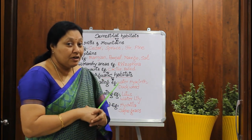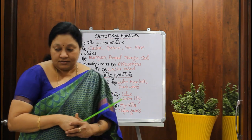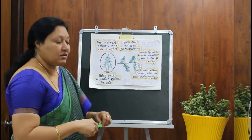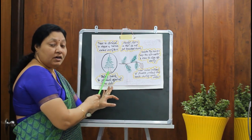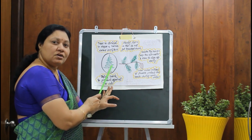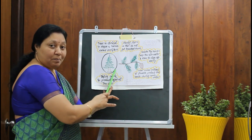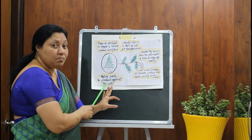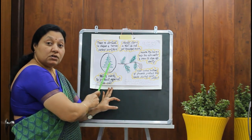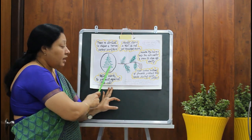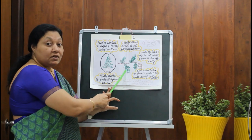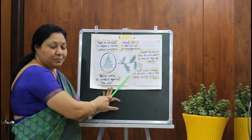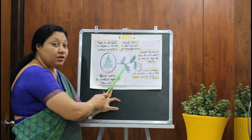Let us pick one example from each group to learn their special features. Let us learn the adaptations in plants growing on hills and mountains. These trees are usually conical in shape, and hence they are also called as conifers. They have a very thick bark which protects against extreme cold. They have shorter stems to avoid harsh winds so that they do not get knocked out. They have needle-like leaves so that rain, water, and snow slides off easily.